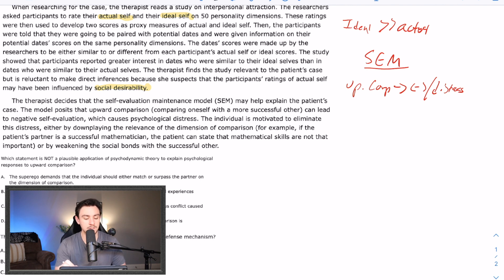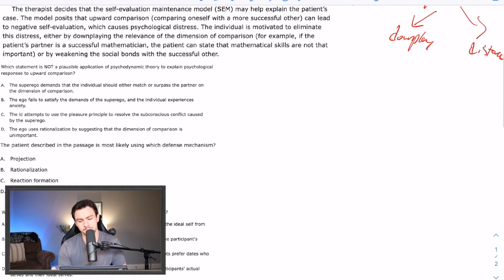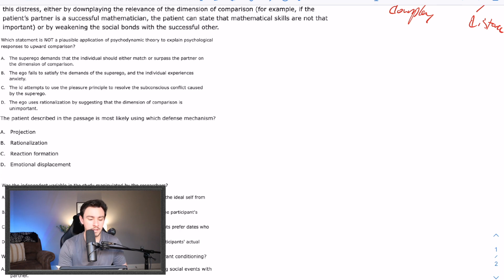The individual is motivated to eliminate the distress, either by downplaying the relevance of the dimension of comparison. For example, if the patient's partner is a successful mathematician, then the patient can say that math is stupid, or by weakening the social bonds with the successful other. So whenever you feel this distress, this model posits that you have two options. You can either kind of state the opposite pretty hardcore, or you can run. So you can run away from that person, kind of distance yourself, or you can downplay. So downplay how important their unique skill is. So if we're going back to the Ryan Reynolds analogy, then I would say something like, it's not even that important for your hair to look good all the time. Or I would stop watching his movies, which I can't. I can't stop. So that would be your response to that negative distress. So let's look at these questions and see how many more Ryan Reynolds jokes I can make in a five-minute period.